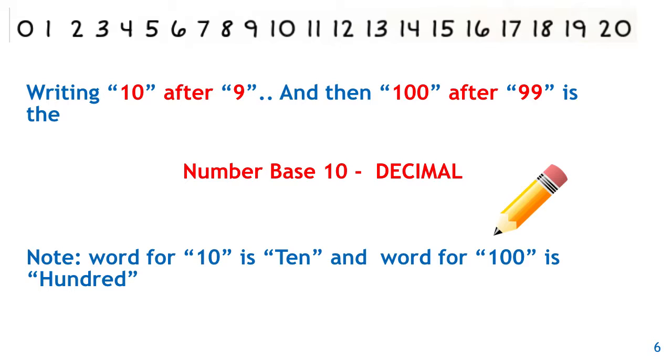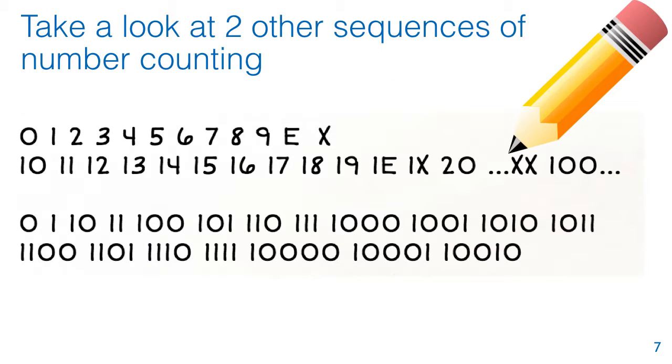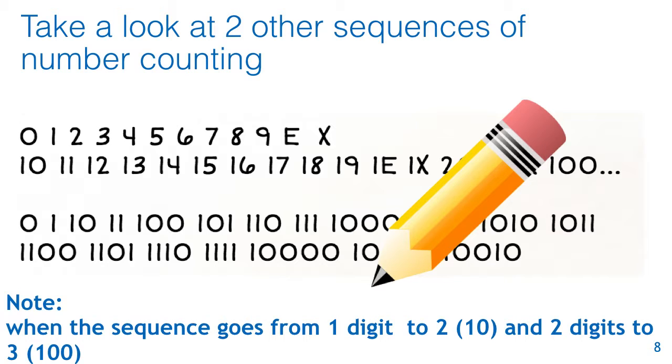So now, take a look at two other sequences of number counting. When the sequence goes from one digit to two, and two digits to three, please note that. We're going to start with the bottom row of counting.